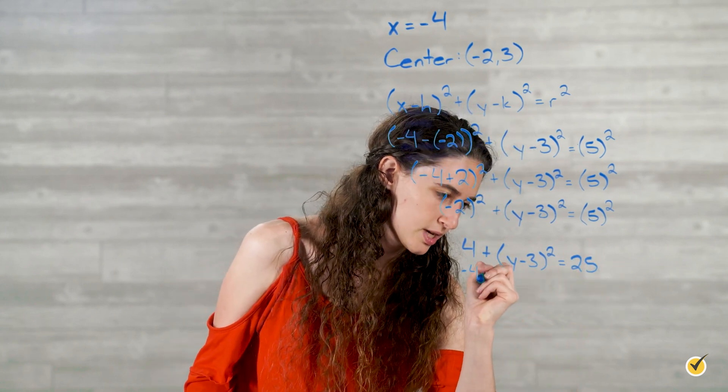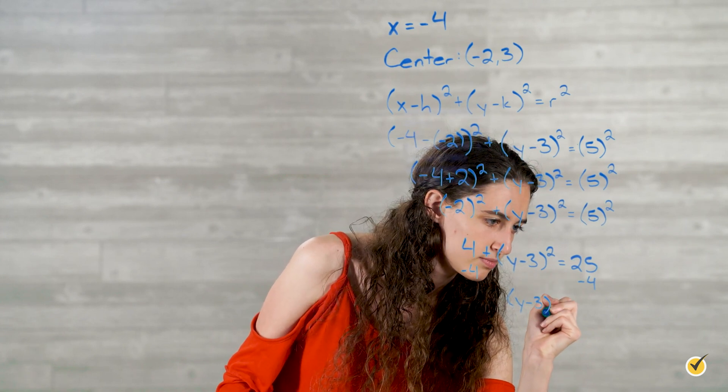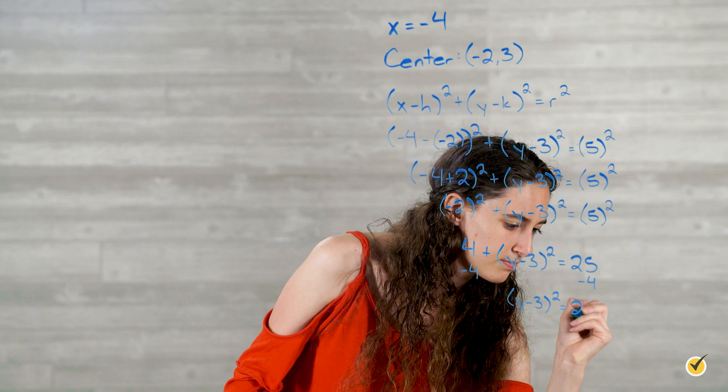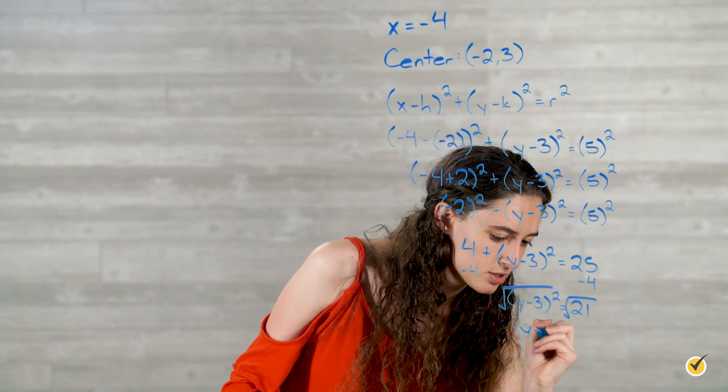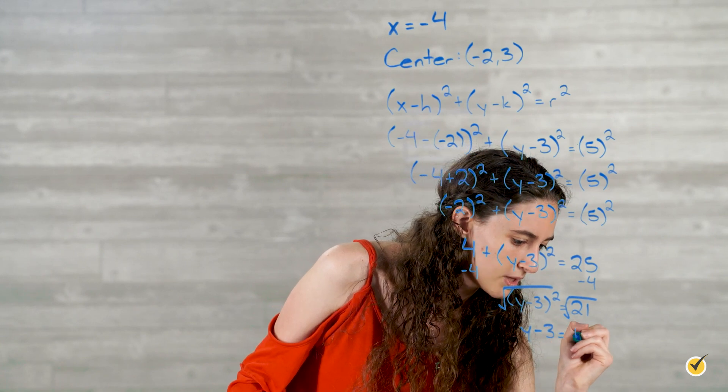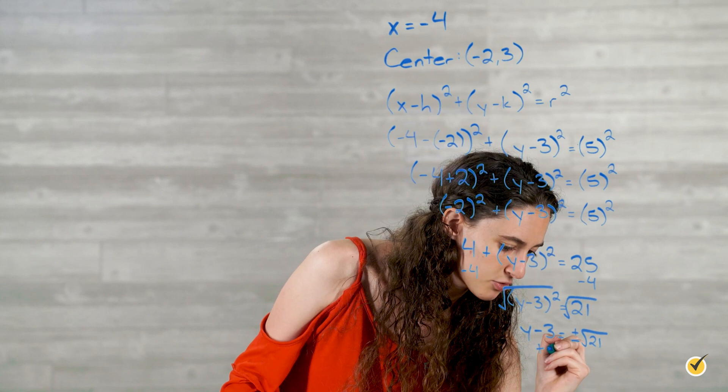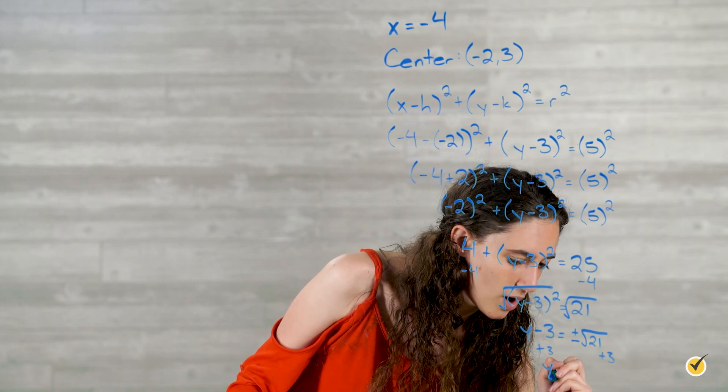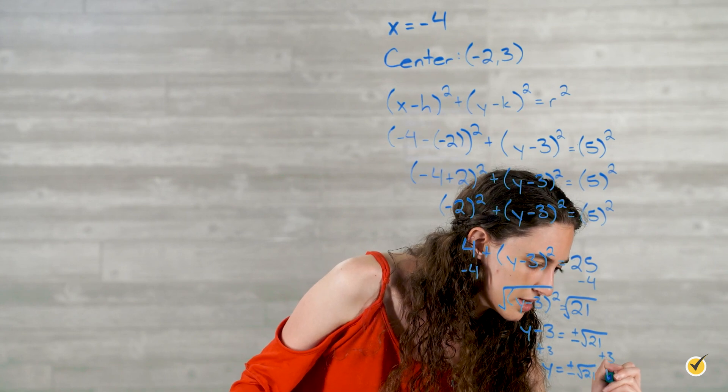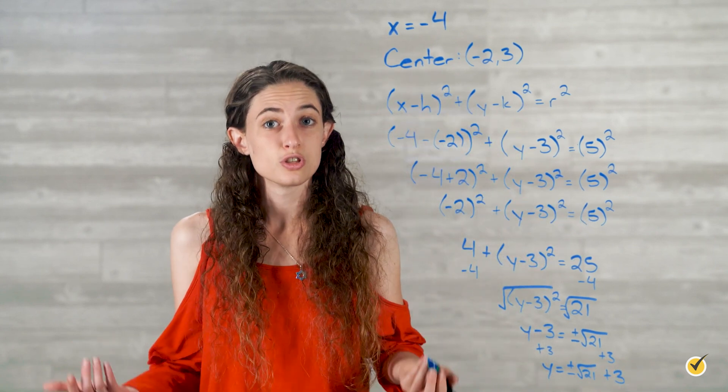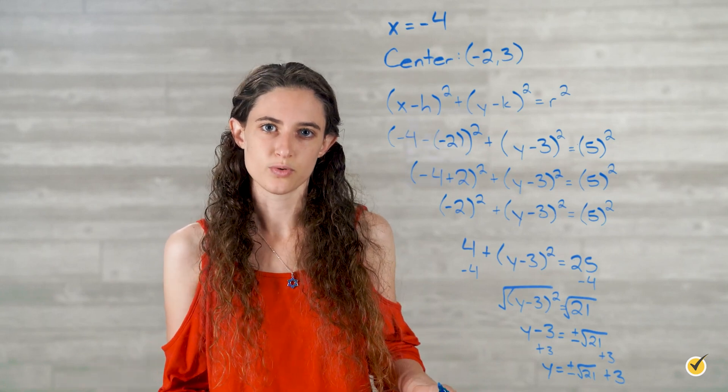Now we'll subtract 4 from both sides. This gives us y minus 3 squared equals 21, and we'll take the square root of both sides. That leaves us with y minus 3 is equal to plus or minus root 21, and all we have to do is add 3 to both sides. So our answers are y equals plus or minus root 21 plus 3. So the two values are the square root of 21 plus 3, and the negative square root of 21 plus 3.